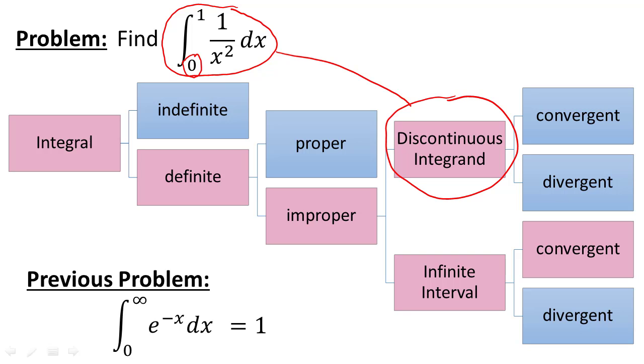But it's not actually too hard to solve. We just have to be careful with our limit notation, and we can do it fairly easily. Which will bring us to the question of whether or not this discontinuous integrand type of improper definite integral is convergent or divergent. So let's consider that graphically.